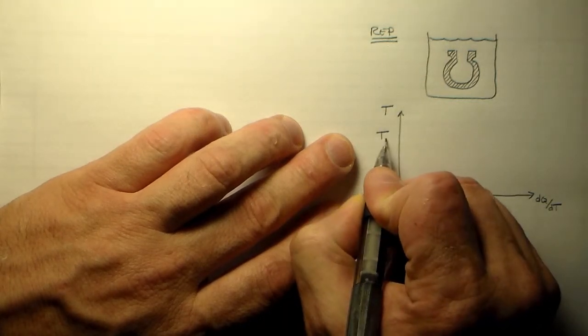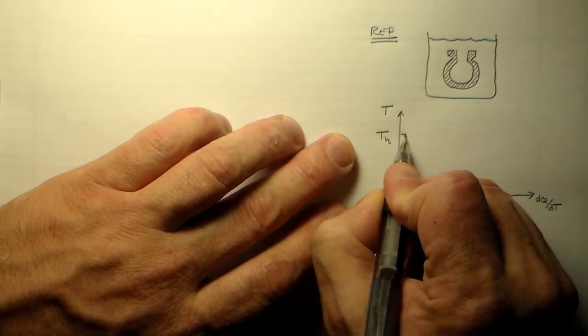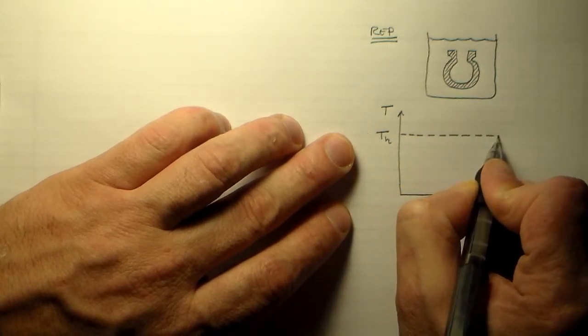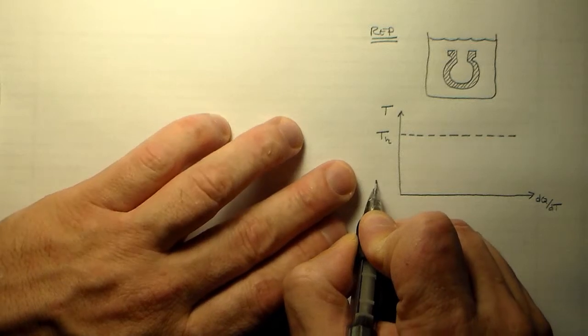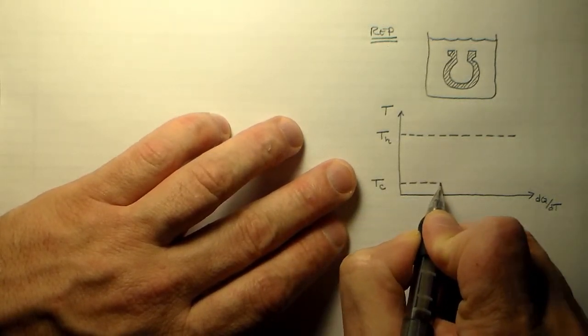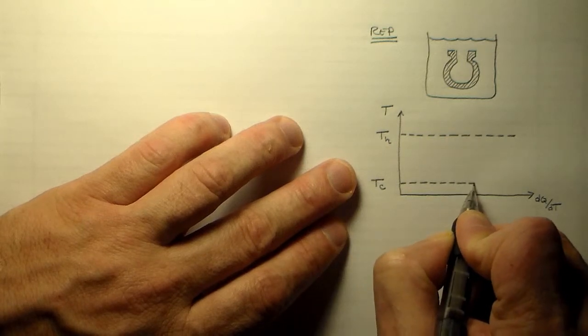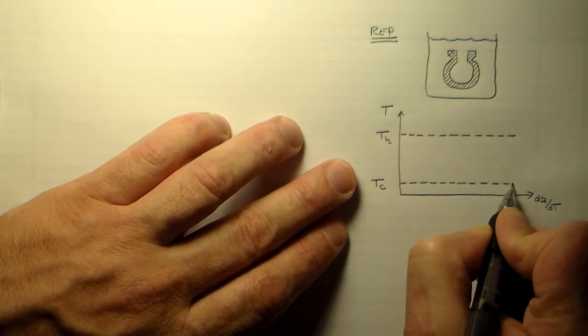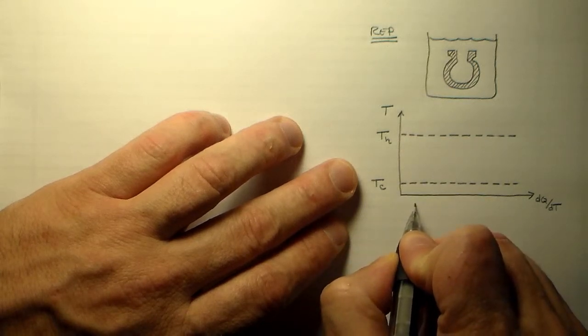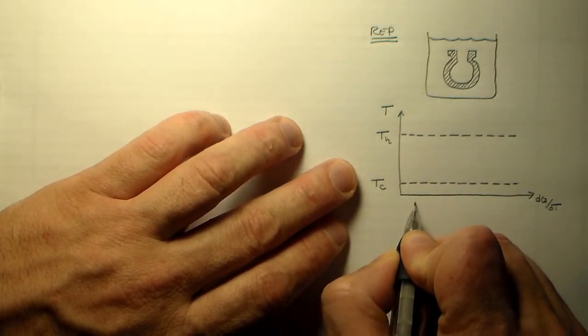So the initial temperature of the horseshoe is this one. And the initial temperature of the cold water is this one. And there's a lot more cold water than horseshoe. So there's a lot of cold water.